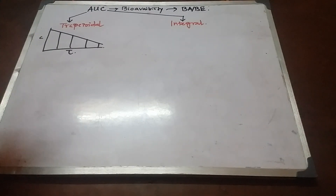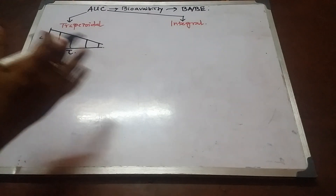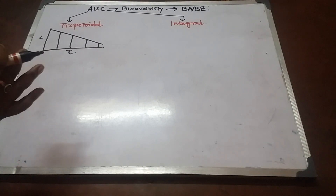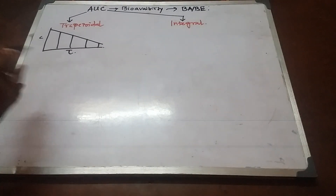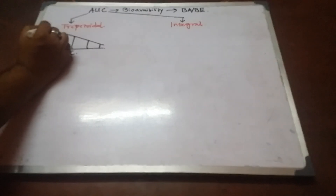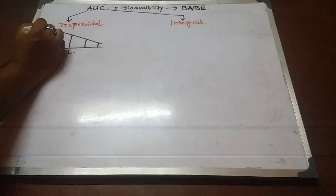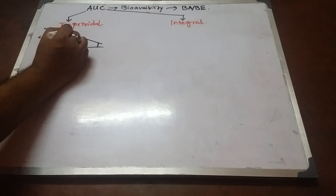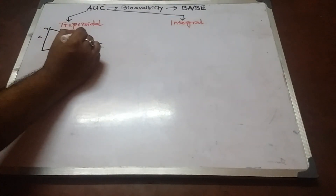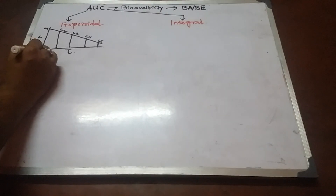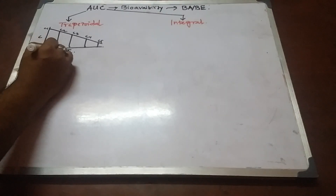We have to determine the area of individual trapezoids and add them together. The formula we generally use considers various concentration levels like C1, C2, C3, C4, and C5, at corresponding time points t1, t2, t3, t4, and t5.